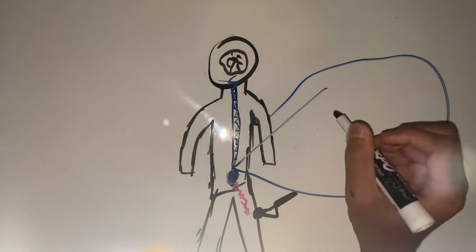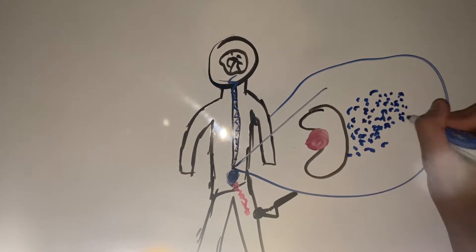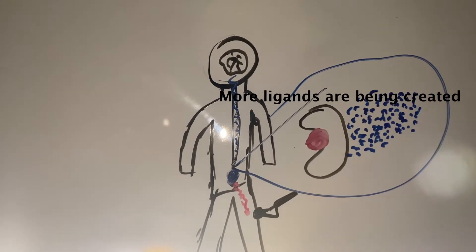The signal travels to the spinal cord, where the pain is amplified by creating more ligands. From the spinal cord, it travels to the thalamus and the cerebral cortex, which responds to the pain.